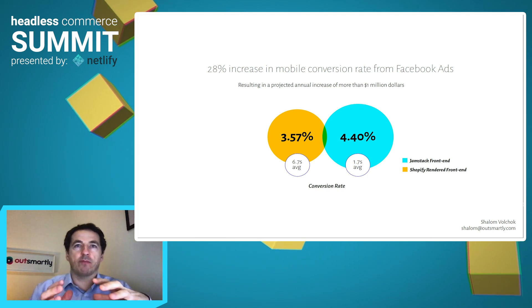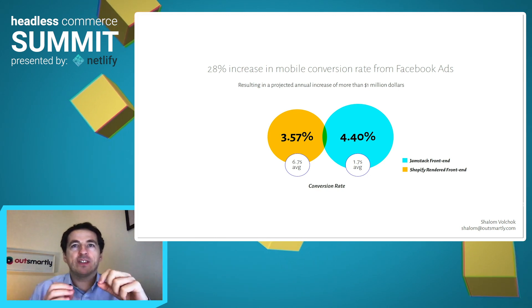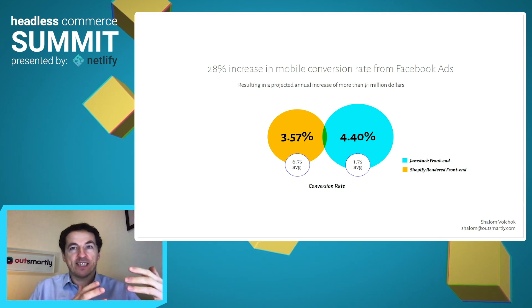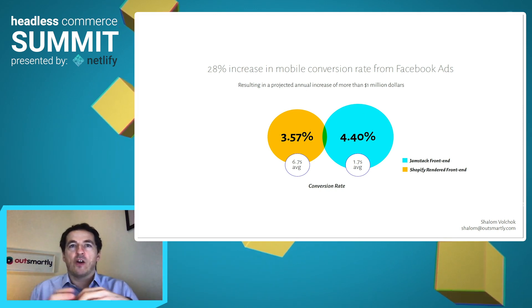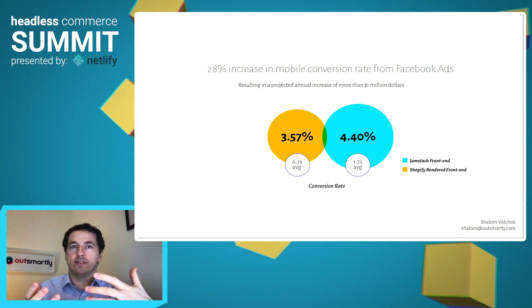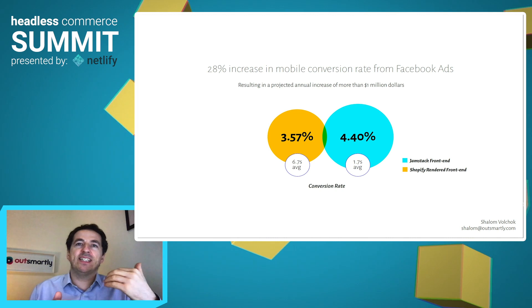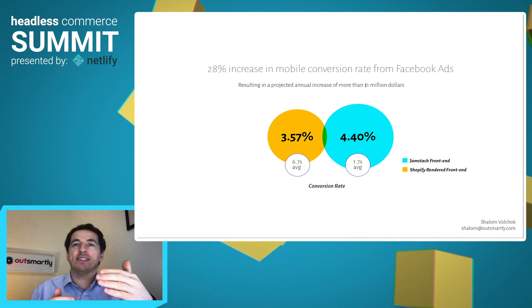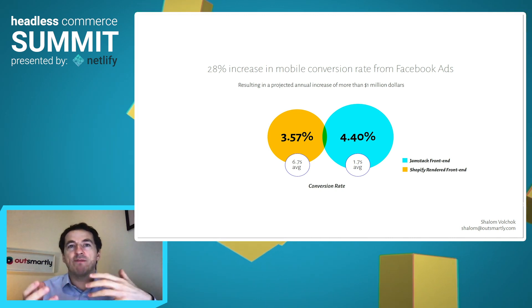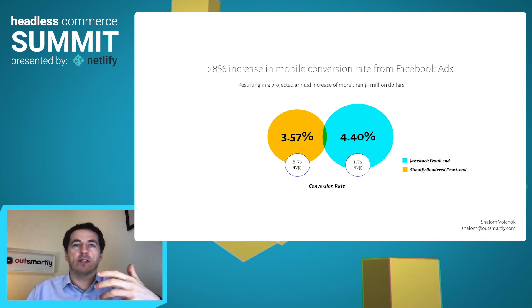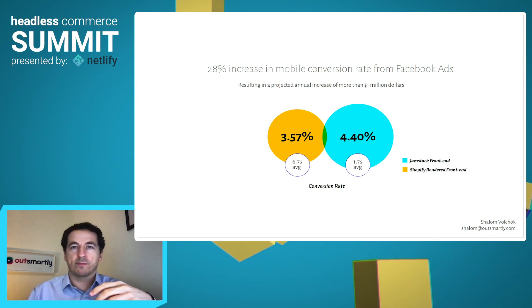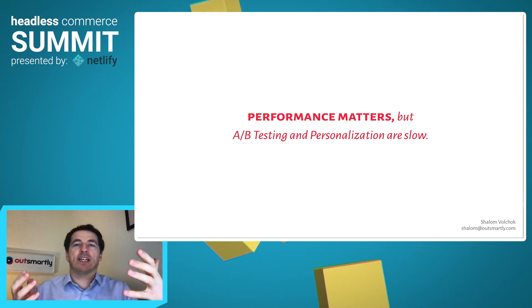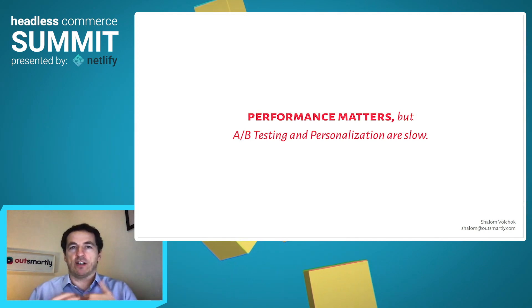When we look at the needs of e-commerce, purely static sites are often not enough, yet static sites deployed to a CDN are really the gold standard for performance. Businesses need to deliver personalization and they need to run A-B testing, and this is really the foundation for optimizing and continuing to grow. The problem is that while performance matters, A-B testing and personalization are slow.